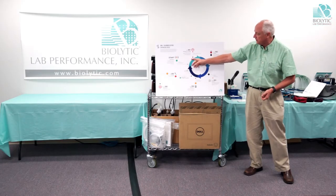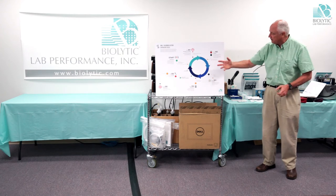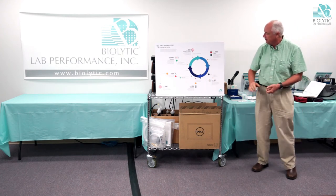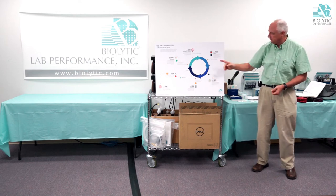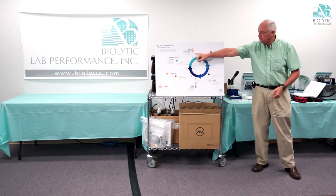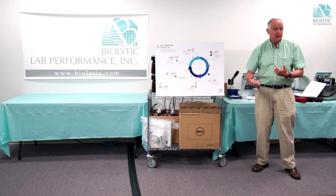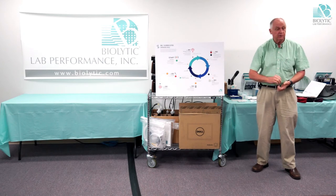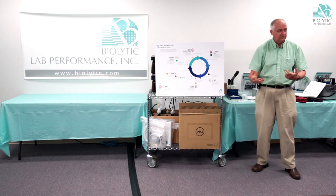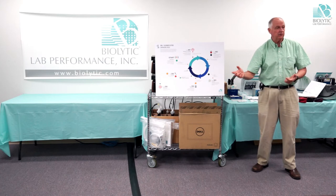After deblock, we wash to get rid of all the acid, then bring in the nucleoside and activator and allow it to react. Next comes capping, followed by oxidation — though this order can vary. Capping blocks off any five prime ends that did not get the nucleoside added, because coupling is not always 100%; 99.5% is pretty good these days. To block those that didn't react, the capping step acetylates that five prime end so it can't extend anymore within this chemistry.